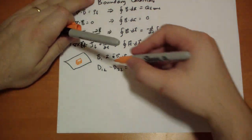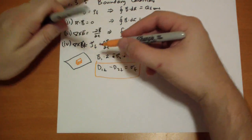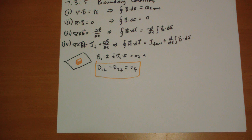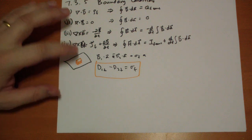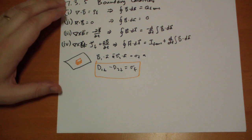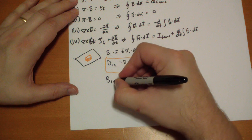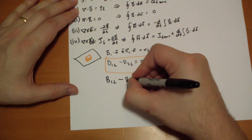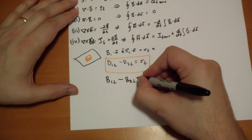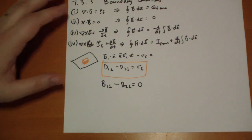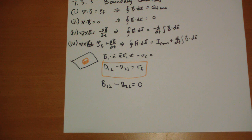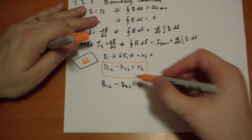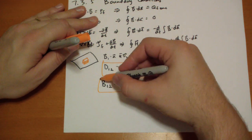From number two, since there is no magnetic charge, we can use similar reasoning. B vector on top perpendicular minus B vector on bottom perpendicular equals zero. That means there is no change in the B vector as you cross a surface charge.